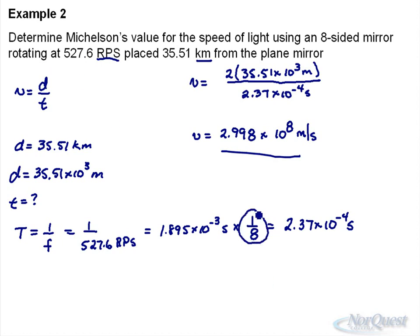Finding the time for whatever partial turn, and making sure that you double the distance because it goes there and back. This is the accepted value of the speed of light measured by Michelson.